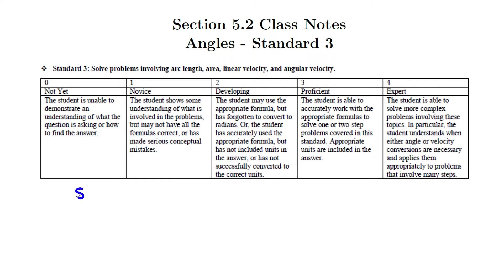The first formula we learned was s = rθ. This applies to a wedge of a circle where you want to figure out the arc length traveled if you know the radius and the angle subtended. One important thing about theta is that it must be in radians, because we defined a radian as the ratio of arc length over radius.